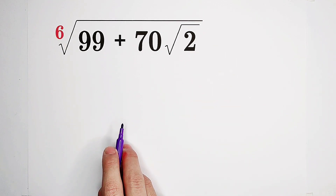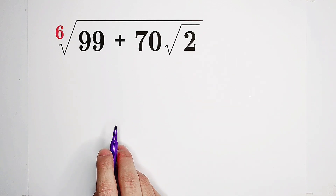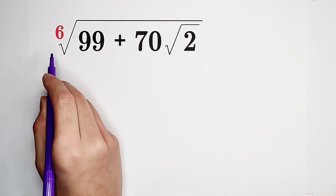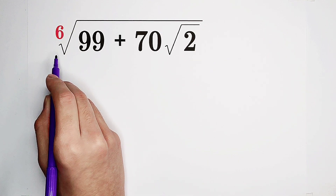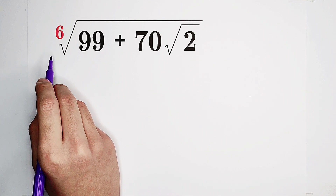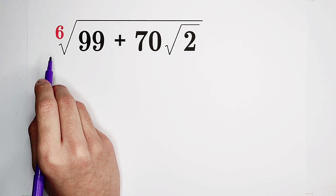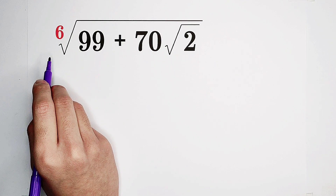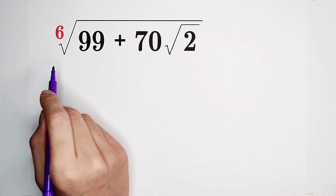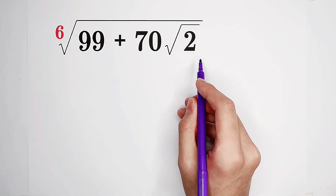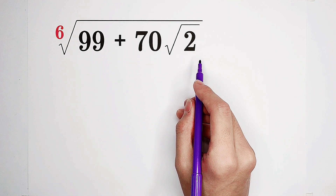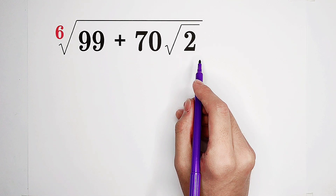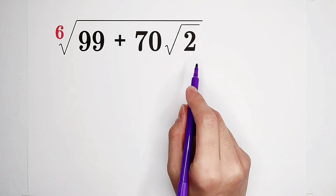Now, what shall we do? Of course. First, we have to inspect this number: 6. 6 can be written as 2 times 3. So now, what does it mean? It means that firstly, we have to write this term as a square term. Then, we have to consider writing the new term as a cube term.